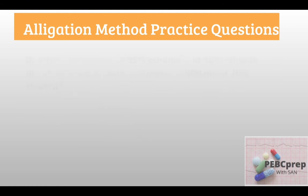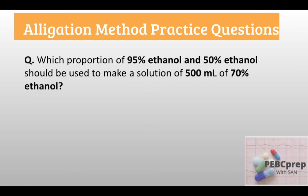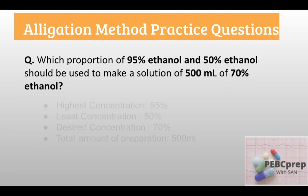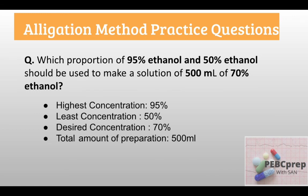Let's see our next question, which is very simple: which proportion of 95% ethanol and 50% ethanol should be used to make 500 ml of 70% ethanol? If you get an easy exam, this is most probably the type of question you will see. If you get a tough question paper, the second and third types of questions will come. But this is the most common sample question asked in exams. Our four important pieces of information: highest concentration 95%, least concentration 50%, desired concentration 70%, and total amount of preparation is 500 ml.